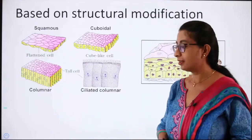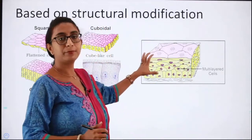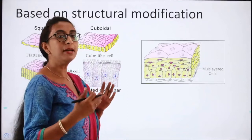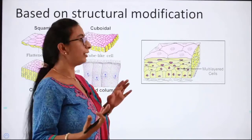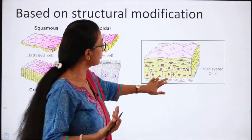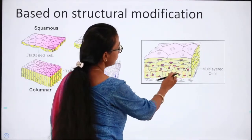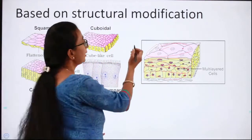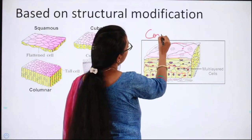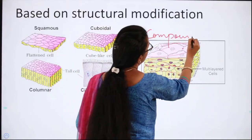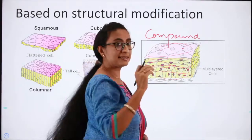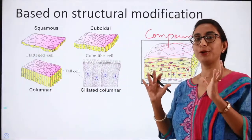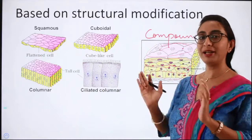Compound epithelium consists of two or more multiple layers of cells, which can be seen here with one layer, then another layer, and another layer stacked together. This is called compound epithelium, whereas a single layer of cells is called simple epithelium.